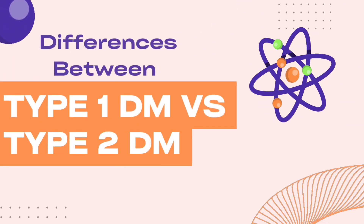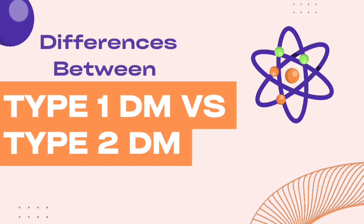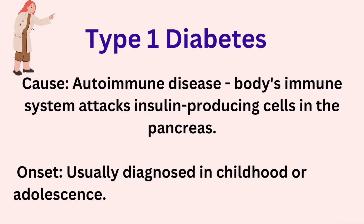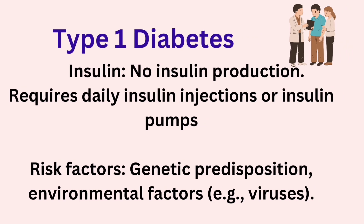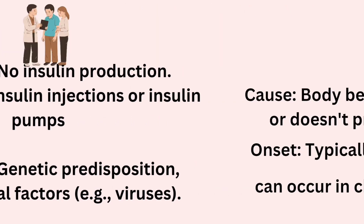Type 1 diabetes: The cause is an autoimmune disease where the body's immune system attacks the insulin-producing cells in the pancreas. Onset is usually diagnosed in childhood or adolescence. There is no insulin production in type 1 diabetes, requiring daily insulin injections or insulin pumps. Risk factors include genetic predisposition and environmental factors such as viruses.